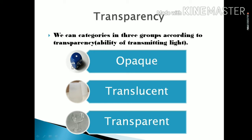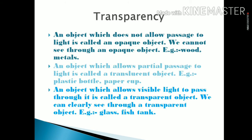The object here is an opaque object, and this glass is translucent, while this glass is transparent. An object which does not allow passage of light is called an opaque object — we cannot see through it. Examples include wood, metals, and cupboards.